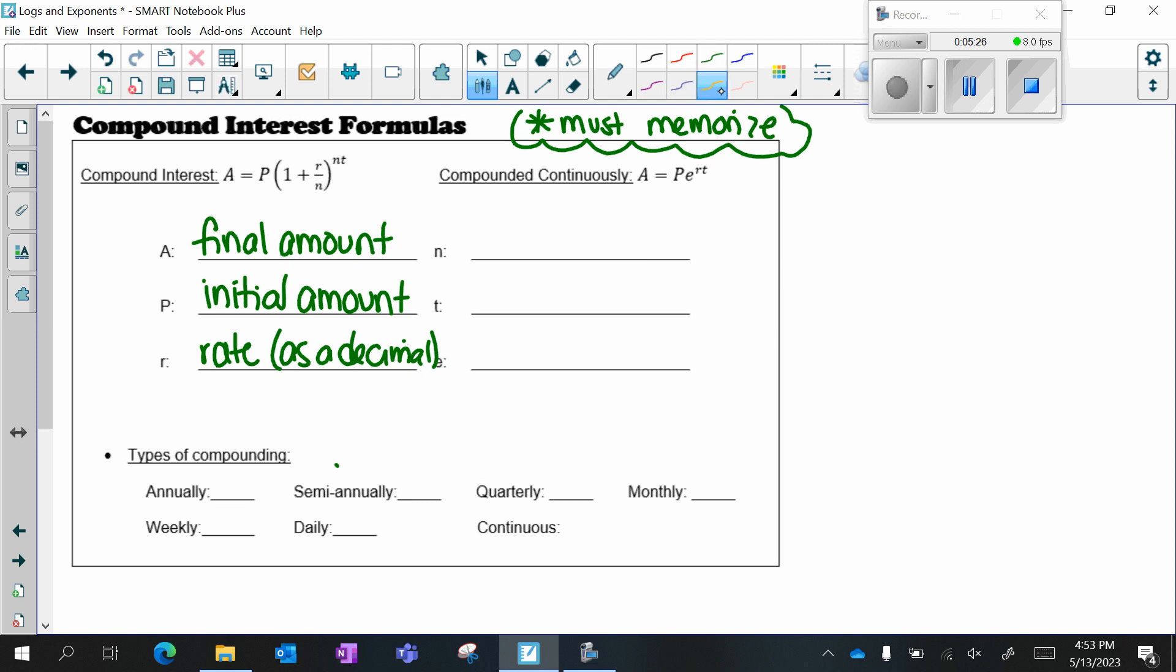So for example, if I gave you something like 3% in the question, that becomes 0.03. If I gave you something like 0.5%, that becomes 0.005. N is the number of times compounded, which I'll go over in a second. T is the time, and by default it's in years unless it's otherwise specified in the question.